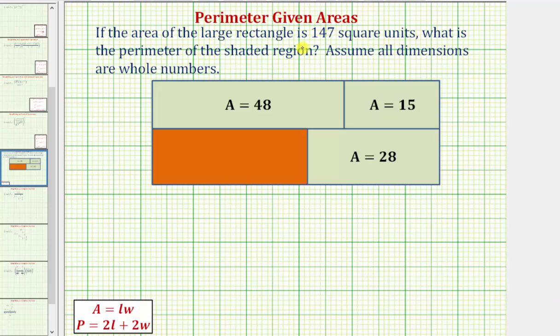If the area of the large rectangle is 147 square units, what is the perimeter of the shaded region — meaning the perimeter of this orange rectangle? Assume all dimensions are whole numbers.